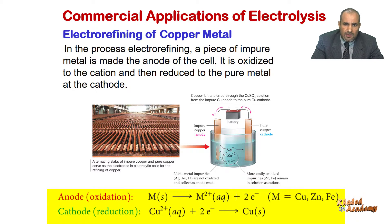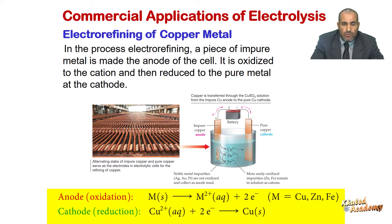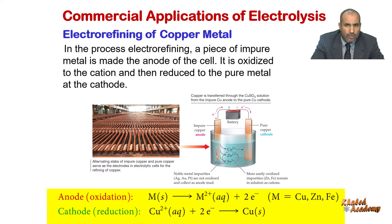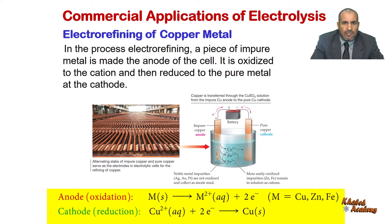At the anode, the metal is oxidized to metal ions plus electrons, while at the cathode only copper ions are reduced to pure copper metal. Thus the net cell reaction simply transfers copper metal from the impure anode to the pure cathode, and the copper obtained by this process is 99.95 percent pure.